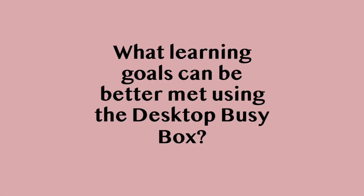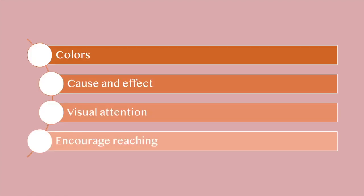What learning goals can be better met using the Desktop Busy Box? You can teach your students colors — there are only four colors on the box, so it's a very simple color learning activity. Cause and effect: what happens when you press each plate? Something different happens, so you can ask them what's going to happen when you press the green or blue plate, and they'll be able to tell you. Visual attention — being able to stay focused on what they're supposed to be doing. Encouraging reaching — those with more severe disabilities will have a hard time moving their arms or reaching to certain things.